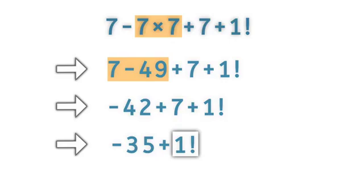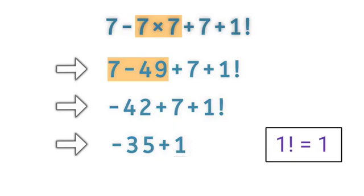How much is a factorial? You take a number and multiply its predecessors until one arrives. 1 factorial is worth 1. So we can write the expression as minus 35 plus 1, which equals minus 34. This is our final answer.